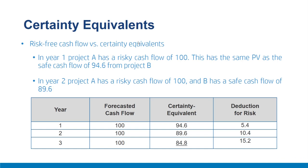Use of a constant risk-adjusted discount rate for a stream of cash flows assumes that risk accumulates at a constant rate as you look further into the future — reflected in certainty equivalents that decline by a constant proportion each period. In summary, CEQs are the certain cash flows considered equivalent to given risky cash flows. Being lower than the risky cash flows, discounting CEQs at the risk-free rate produces the same present value as discounting risky cash flows at the appropriate risk-adjusted rate. CEQs are useful for examining the risky and risk-free components of a project.